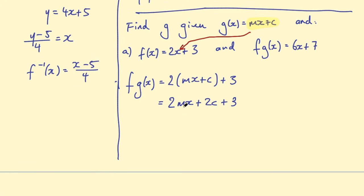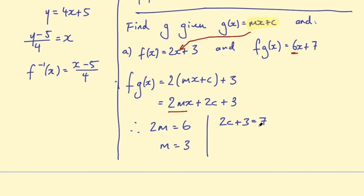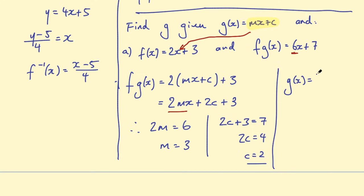Since both expressions equal f of g, we can match coefficients. The coefficient of x: 2m must equal 6, so m equals 3. The constant terms: 2c plus 3 must equal 7, so 2c equals 4, meaning c equals 2. So with m equals 3 and c equals 2, that gives us our final answer for g.